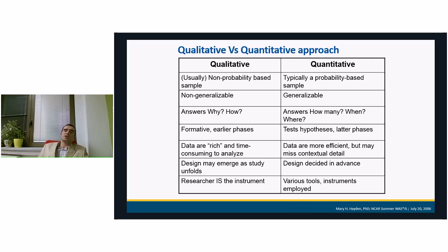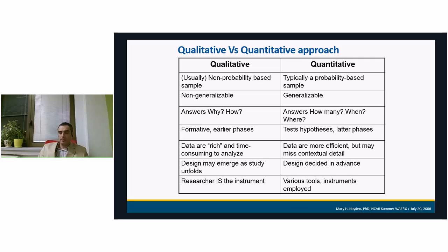Qualitative research is focused on questions like: why is this happening, how is it happening, how are things related? On the other hand, quantitative is based on numerical data and answers questions like how many, when, and where. Qualitative happens in earlier phases when you want to discover some new theory — it is rather formative. Quantitative is in the later phase of research when you want to test some already established theory.